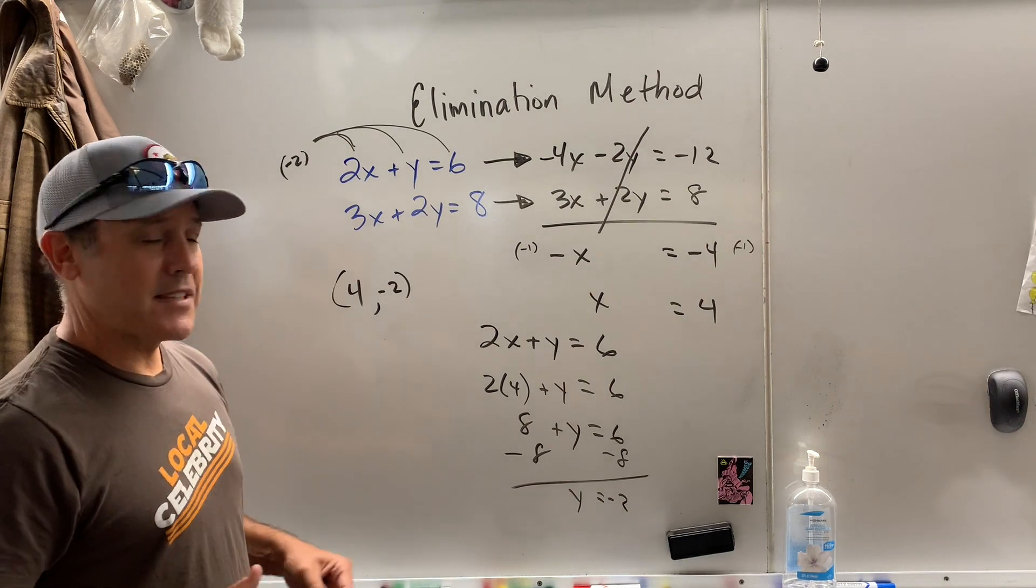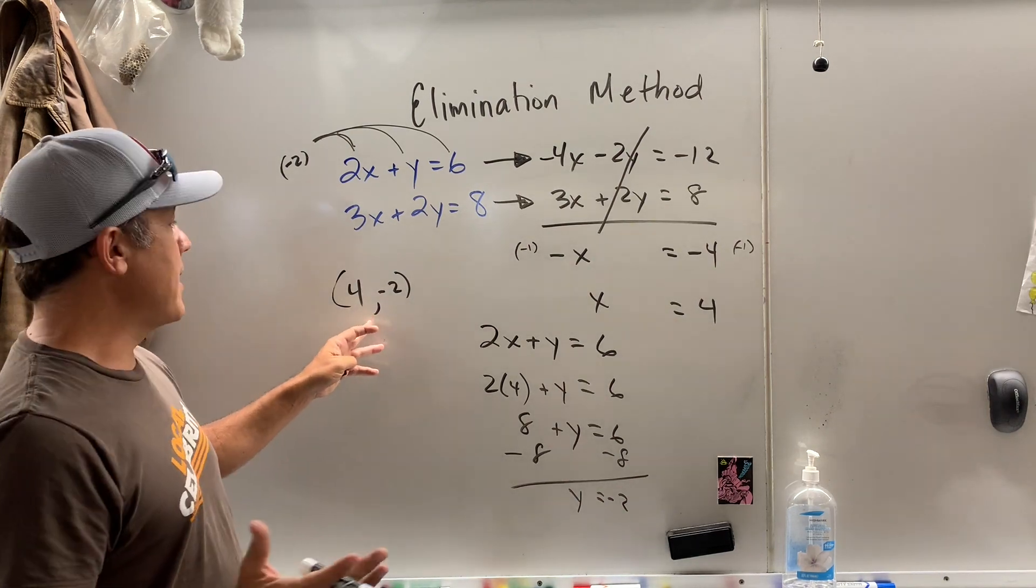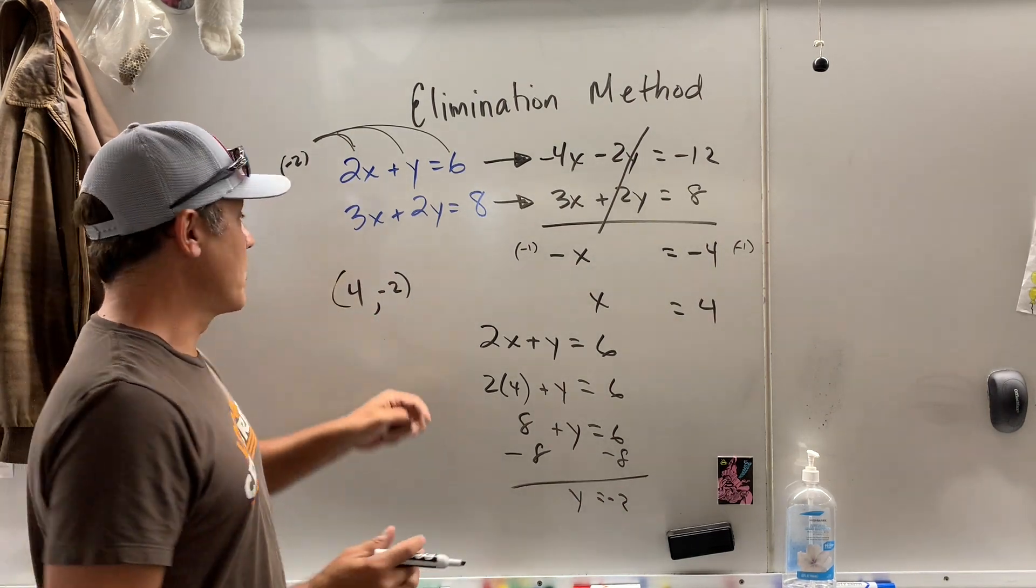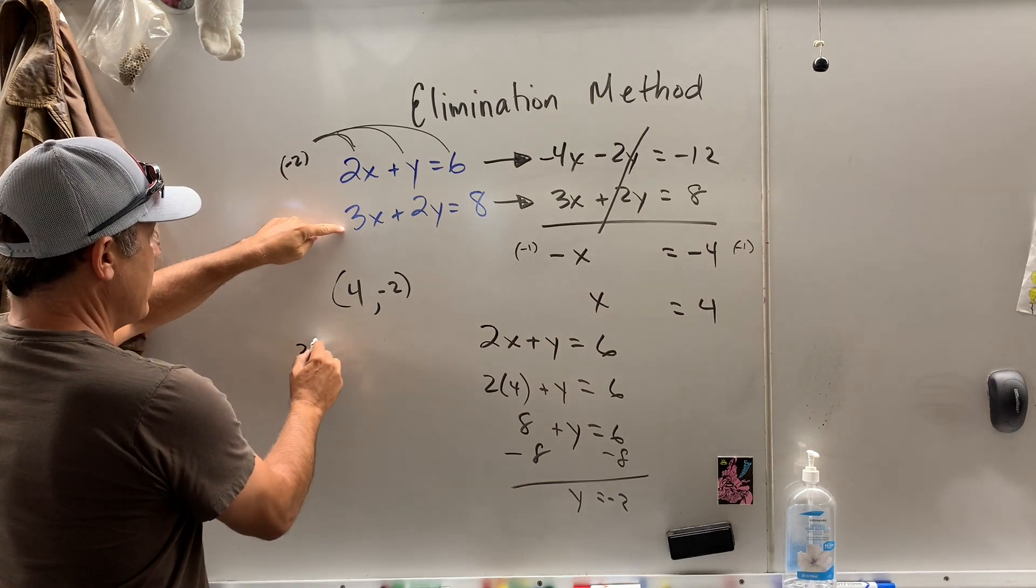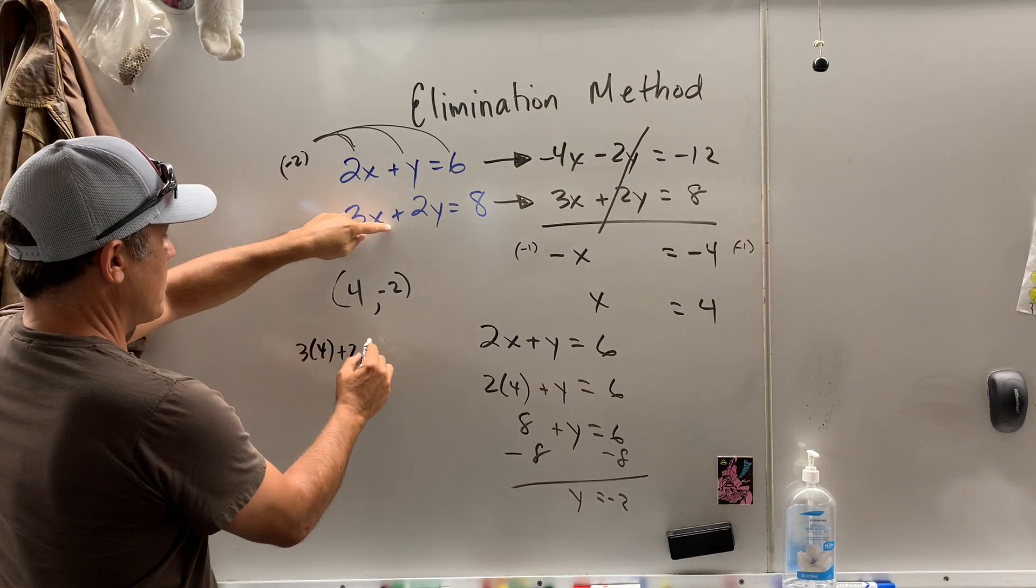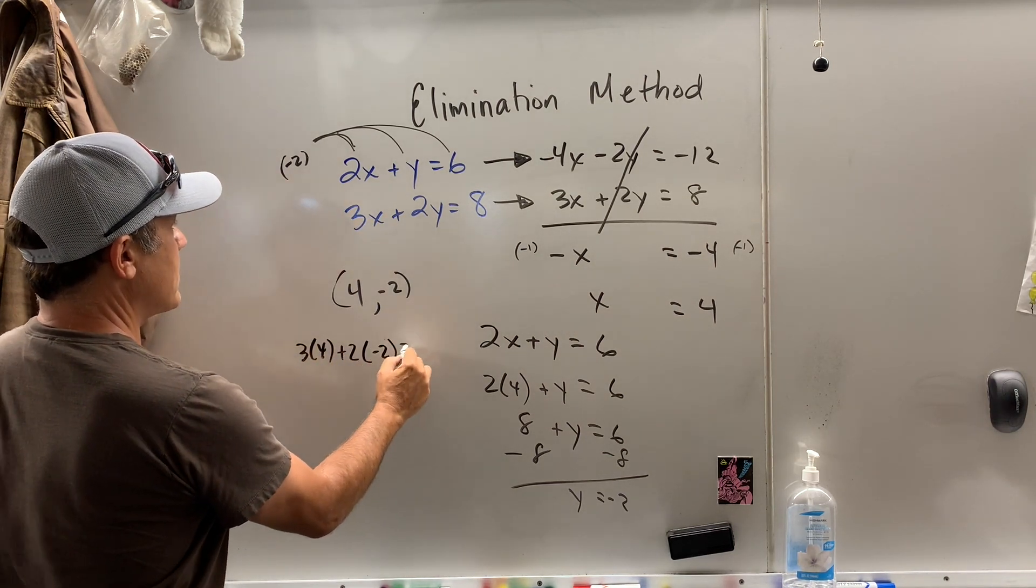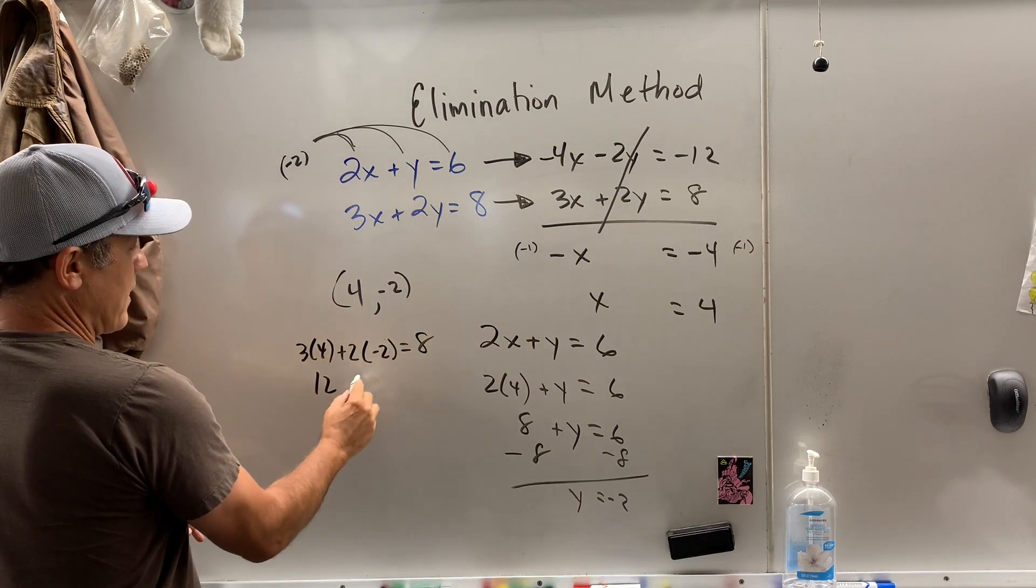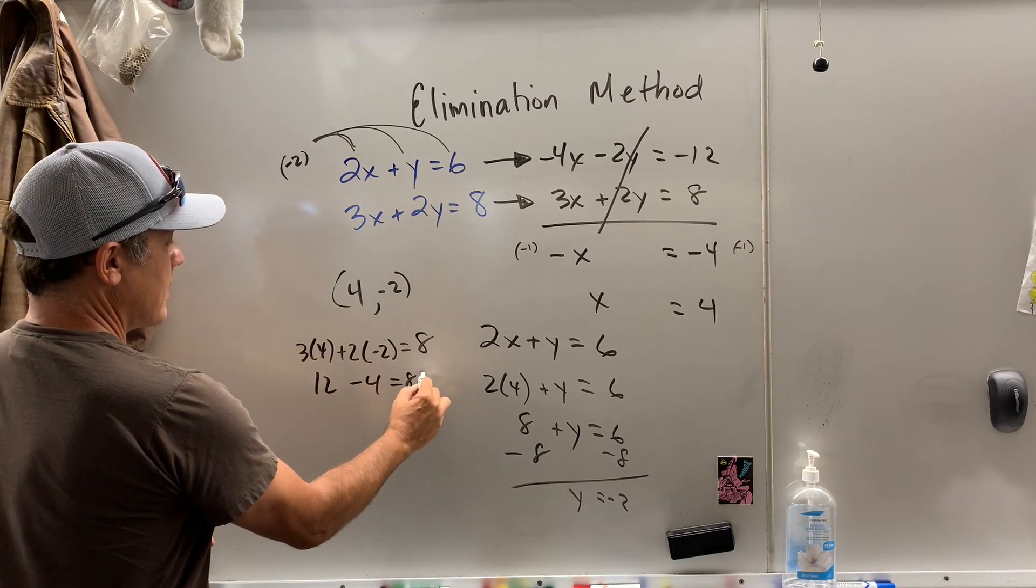Now, if I'm taking a test, I want to check my work. That's why I love math, because you can many times check your work. So let's go in here. 3 times 4 plus 2 times negative 2. Does that equal 8? Well, what do we got? 12 minus 4 equals 8. Check.